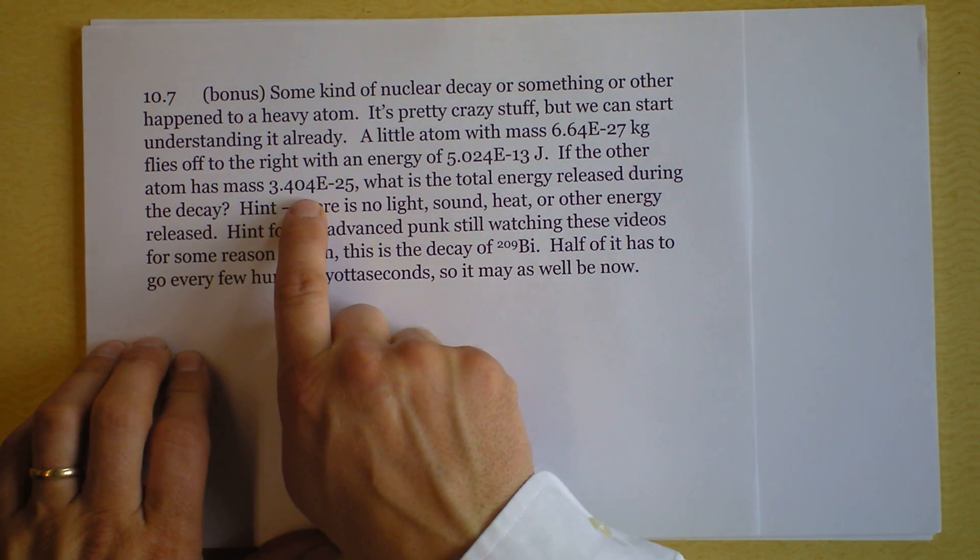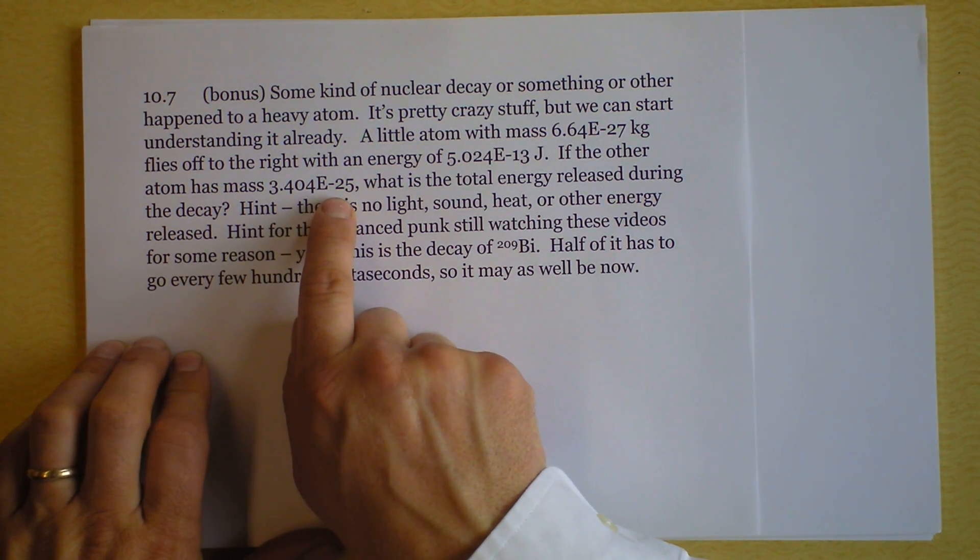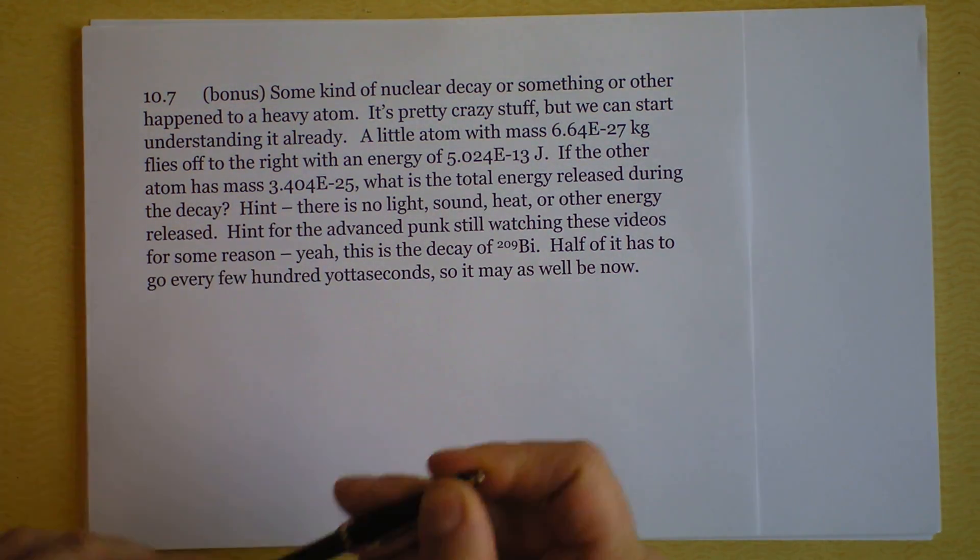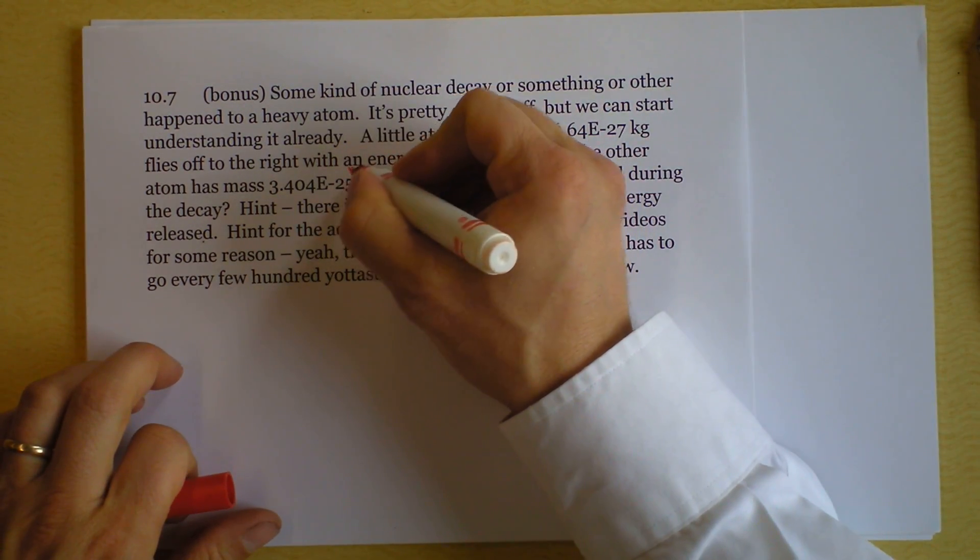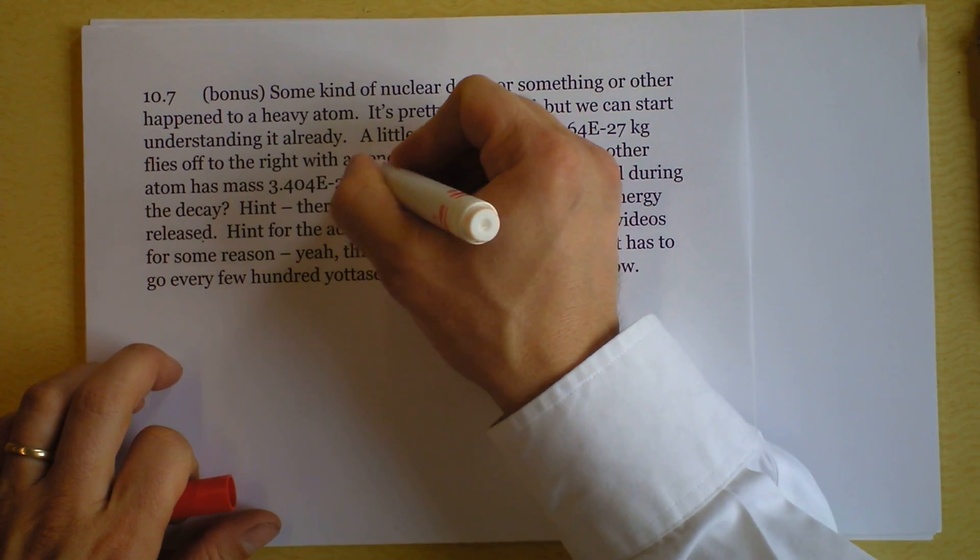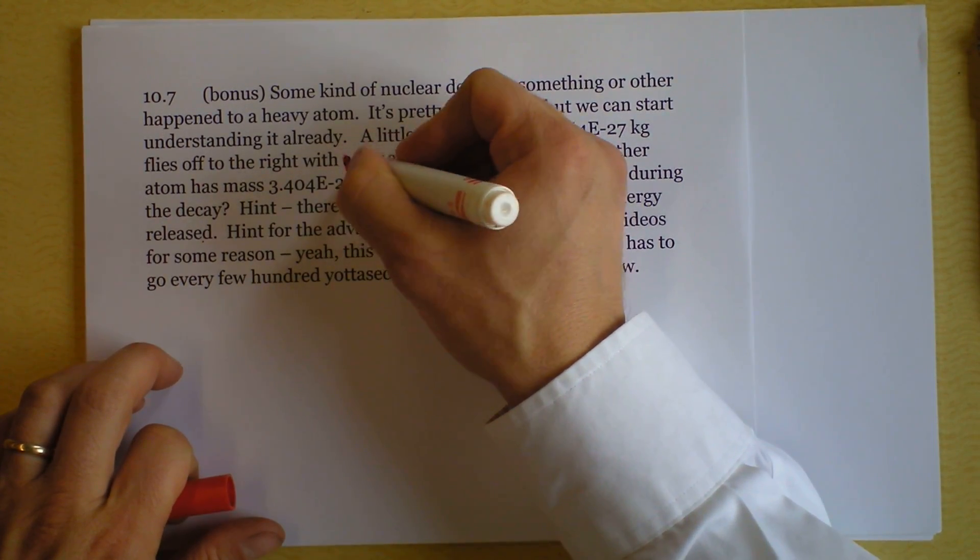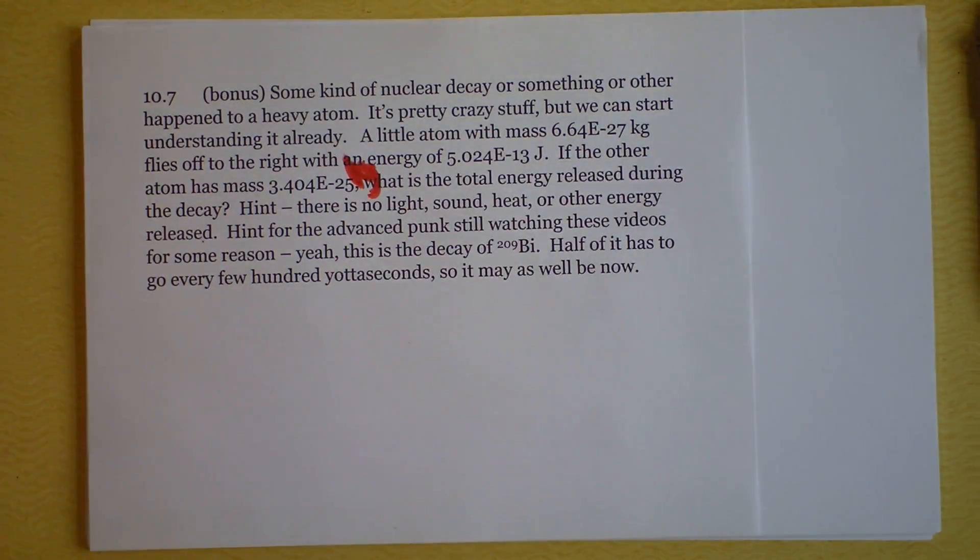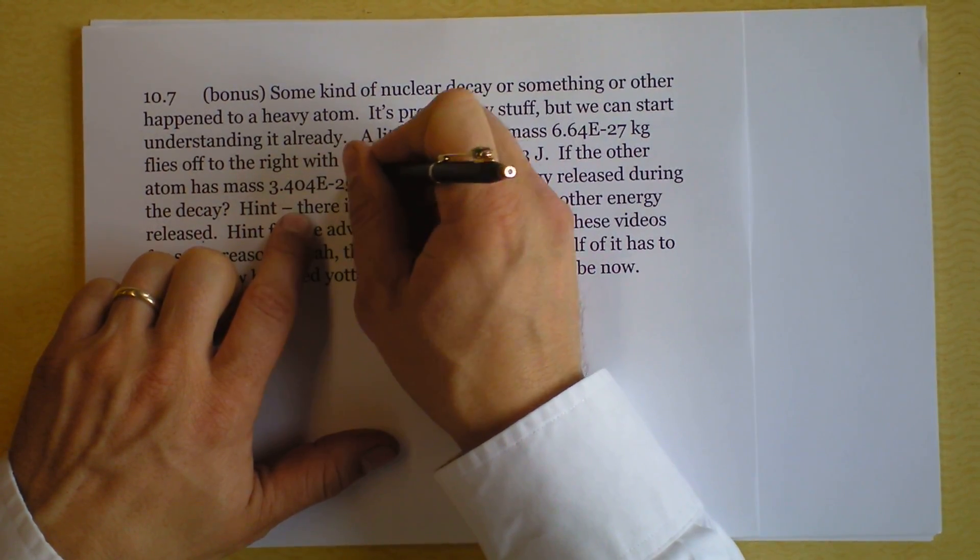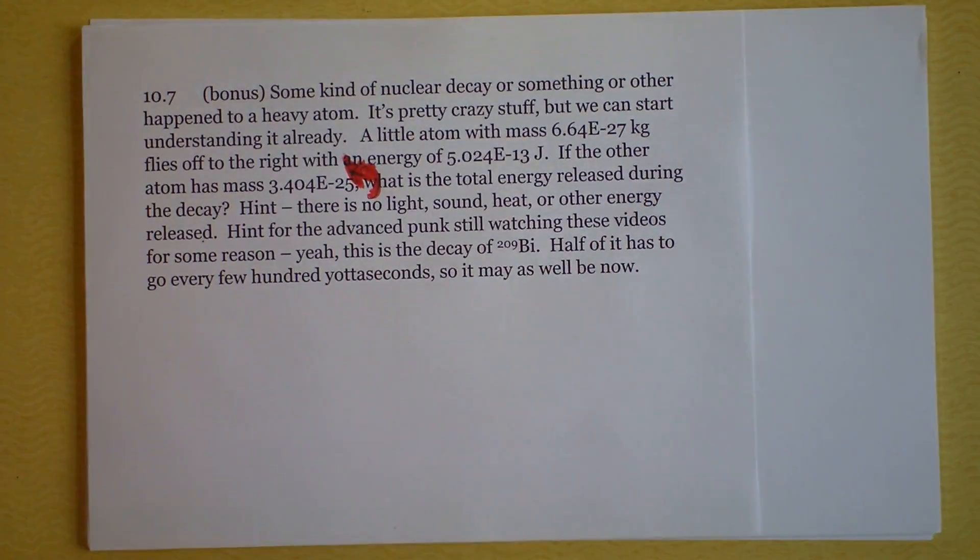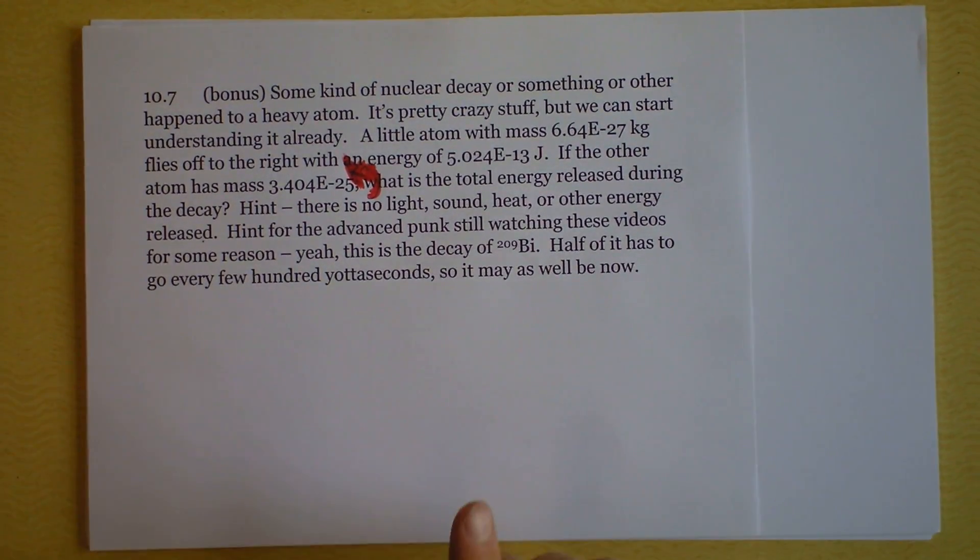And there's another atom with a mass 10 to the negative 25th kilograms. Oh, sorry. Kilograms. Kilograms. Who edits these things? Dang it. Apparently, nobody edits these things. All right. You've got a mass in kil- that doesn't look like kilograms at all. It's supposed to be kilograms.